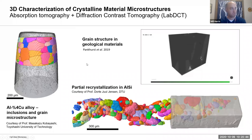This is my one-slide highlight of DCT. The idea of diffraction contrast tomography is looking at crystalline materials — a sample that is polycrystalline, all the same density, so in normal x-ray imaging you don't see anything about the crystal structure. But if you play some games with the way you collect data, you can actually collect diffraction signals coming off crystalline material — kind of like XRD.